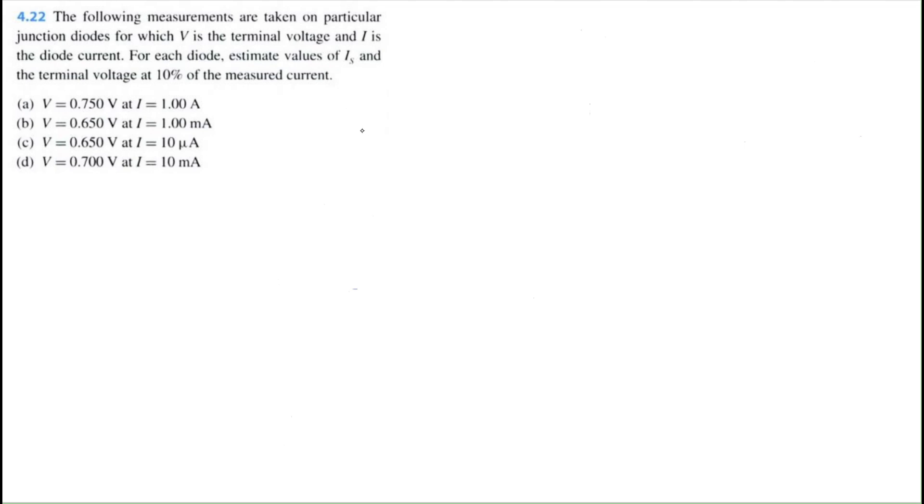Let's solve problem 4.22 from Microelectronics Circuits 8th edition by Sedra Smith. The following measurements are taken on particular junction diodes, where V is the terminal voltage and I is the diode current. For each diode, estimate values of IS and the terminal voltage at 10% of the measured current.